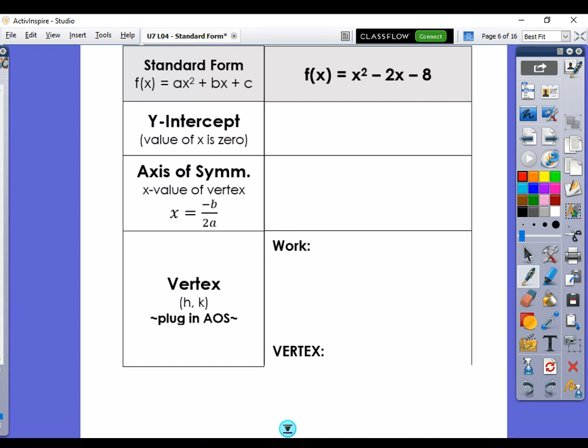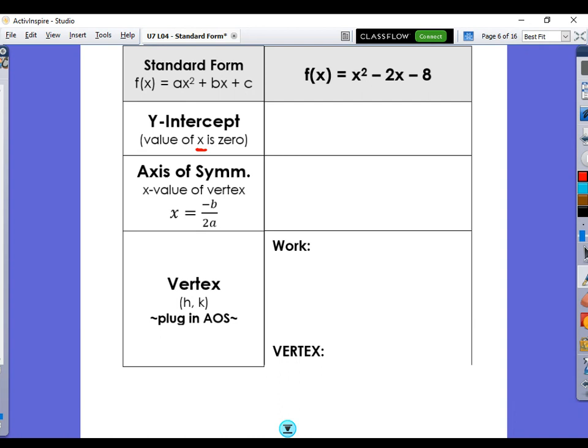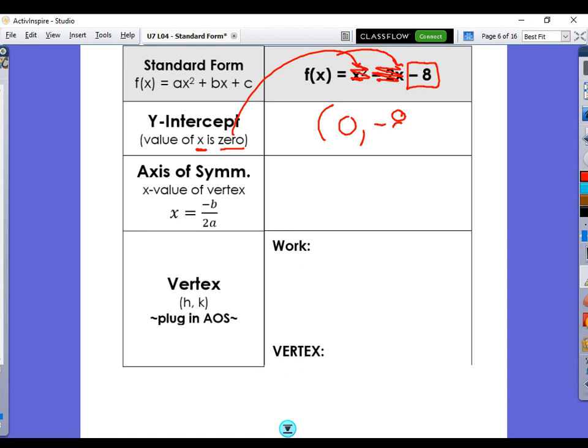First thing is, before we do the vertex and get into that nitty-gritty, let's talk about the y-intercept, because the y-intercept is actually super easy. All you have to do is realize that if you're finding the y-intercept, x is 0. So think about that for a second. If you were to plug in 0 right here and right here, they disappear. What are you left with? You're left with negative 8. Done. Your y-intercept is 0, negative 8.